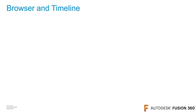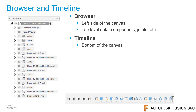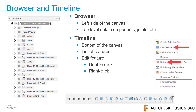Inside of Fusion 360, the browser appears on the left side of the canvas and contains top-level information for components, joints, and sketch information. The timeline is shown at the bottom of the canvas and lists all of the features for that design and/or component. You can edit a feature by double-clicking on it or right-clicking on it — from that menu you can delete or edit the feature. You can also change the order of a feature in the timeline by clicking and dragging it.